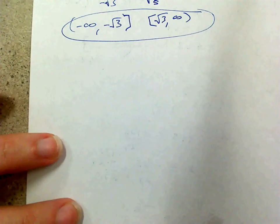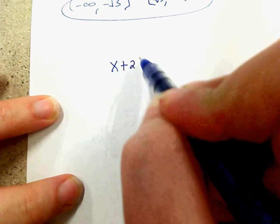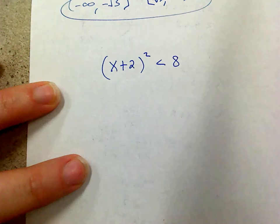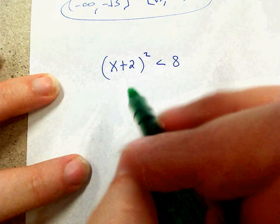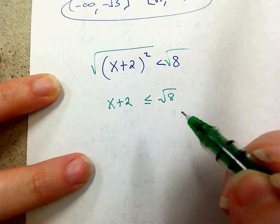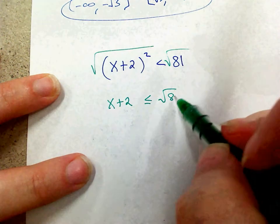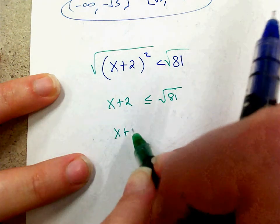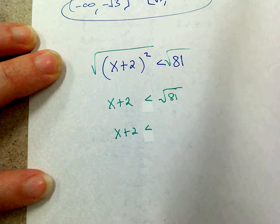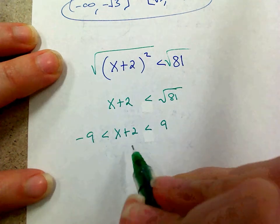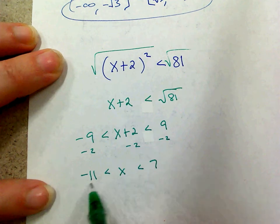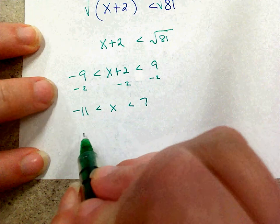What if I'm solving something like (x plus 2) squared less than 81? We take the square root of both sides since the square is the outermost thing. So x plus 2 is less than 9 but greater than negative 9. Then subtract 2 from all three sides: negative 11 is less than x, which is less than 7. Negative 11 is less than 7 — that makes sense. So my answer is from negative 11 to 7 with parentheses.